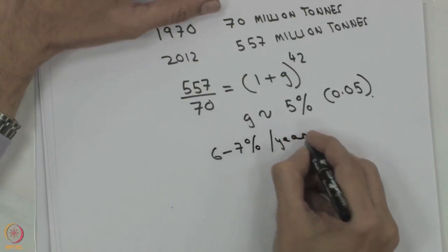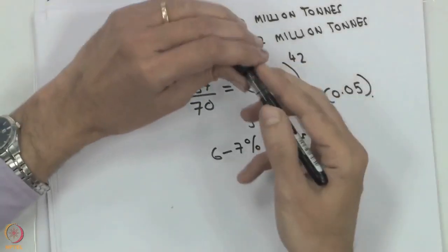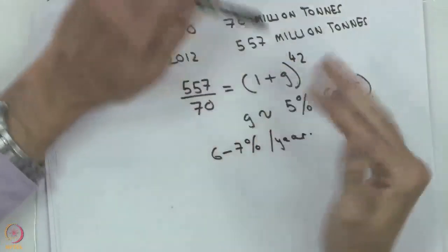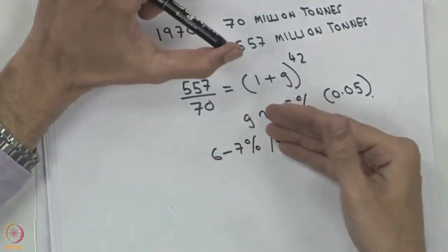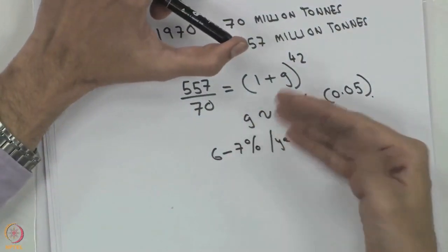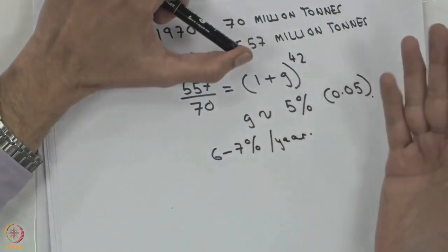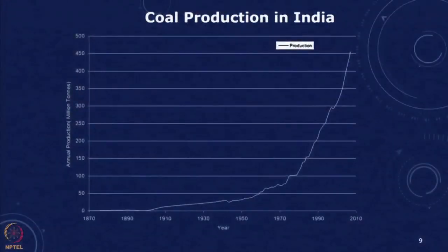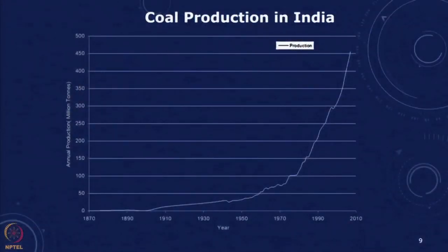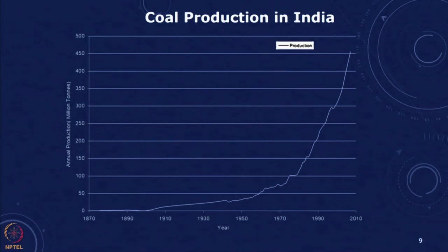Coal consumption has been growing exponentially over the early years. If we take 1970 and 2012, we can find out the growth rate: 557 divided by 70, calculated as a compound annual growth rate over 42 years, gives a growth rate g corresponding to roughly 5 percent. In the recent past, coal has been growing at 6 to 7 percent per year. So if we think in terms of exponential growth, the number of years for which the coal will last would be much lower than the static R/P ratio estimate.